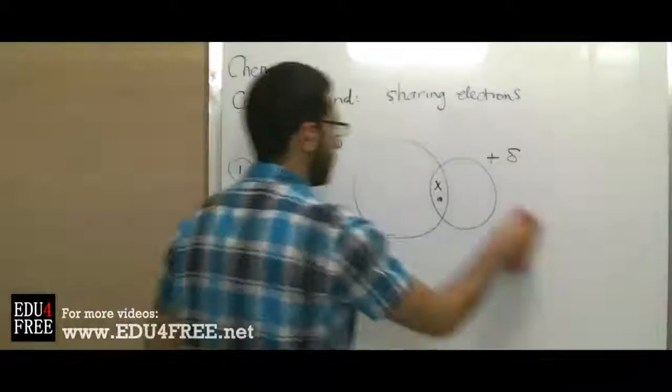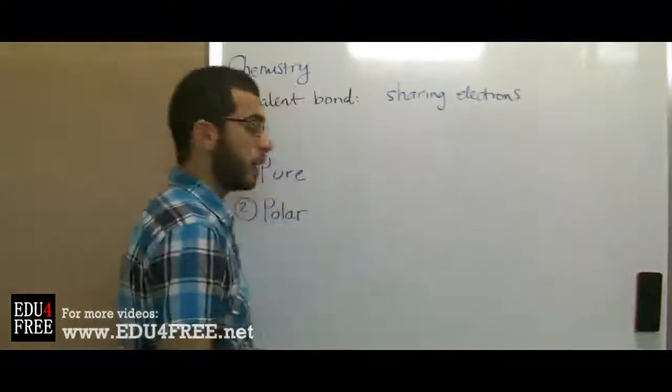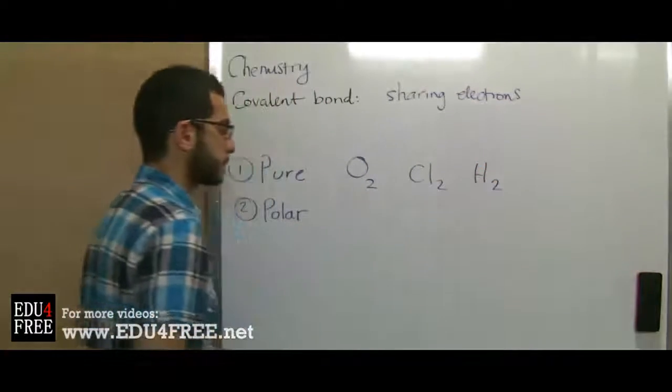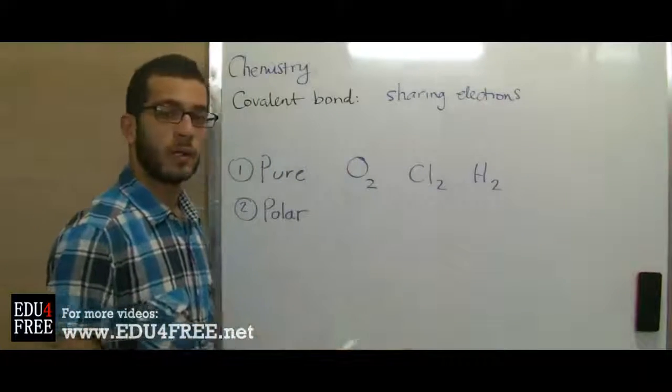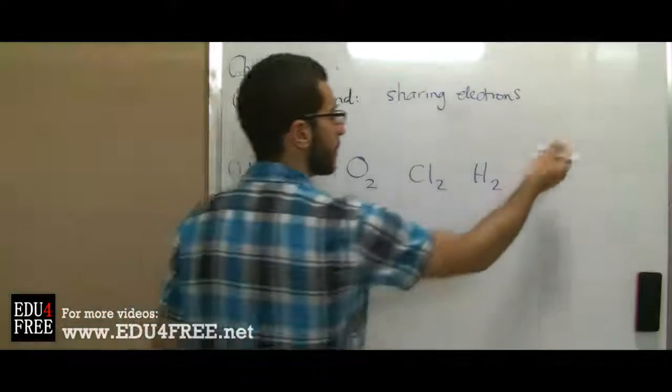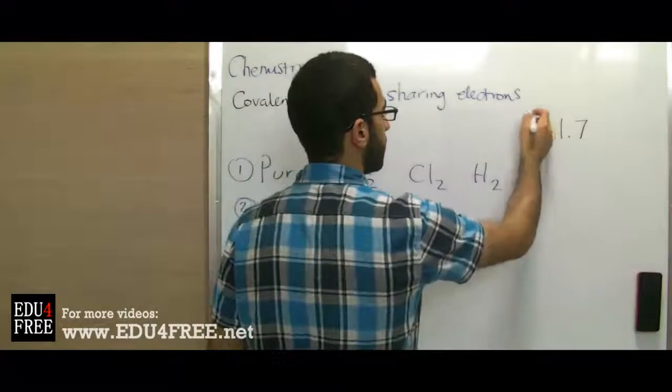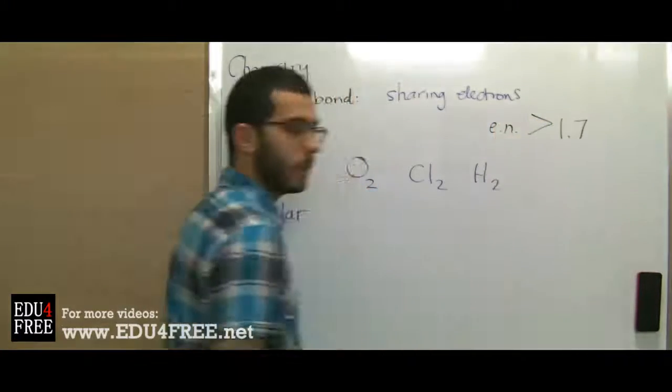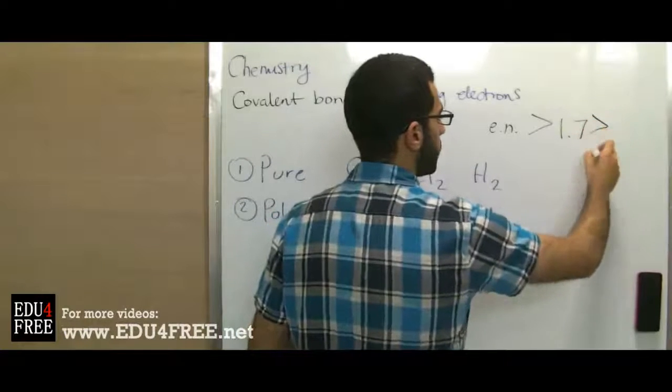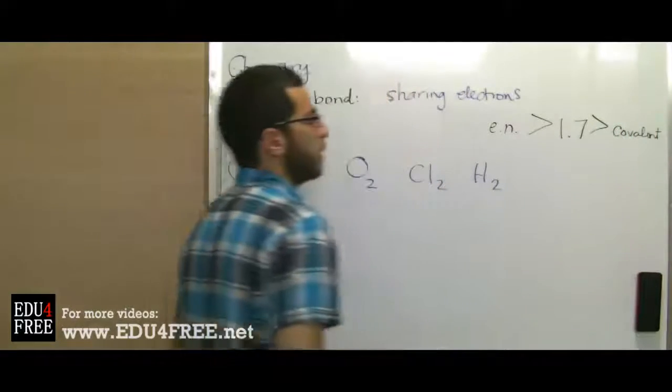Pure bonds occur between molecules that contain atoms of the same type. For example, the oxygen molecule, chlorine molecule, hydrogen molecule, and so on. In these molecules, the two atoms are of the same type. We remember from last time that molecules with electronegativity difference higher than 1.7 are ionic compounds, and the ones with less than 1.7 are covalent.